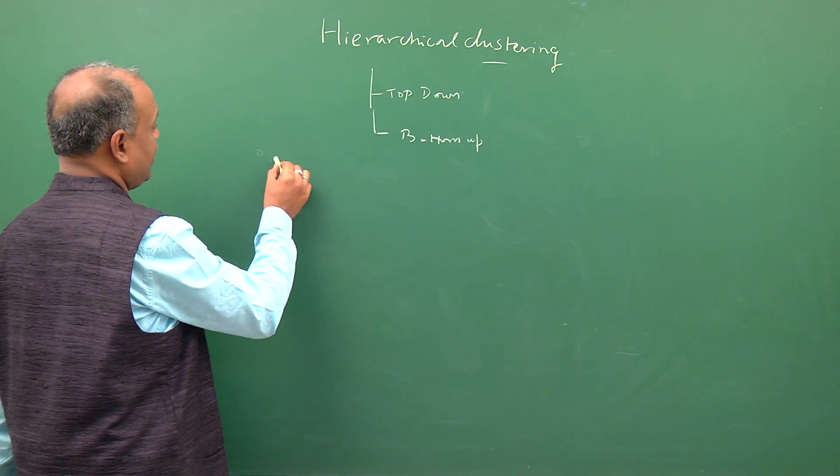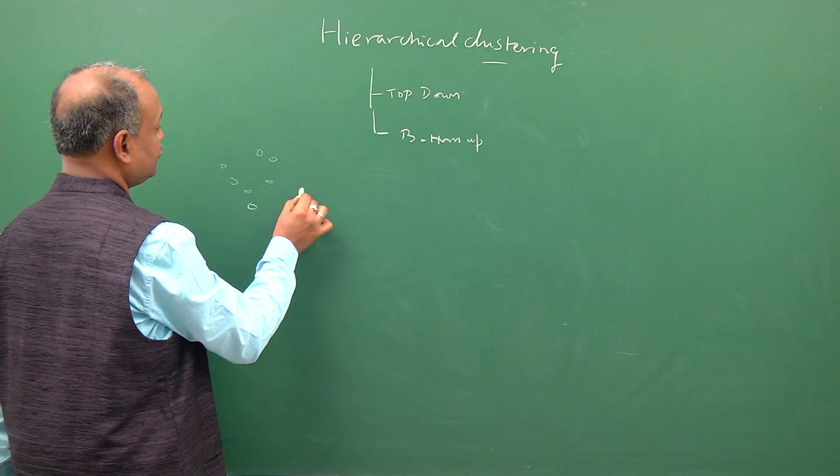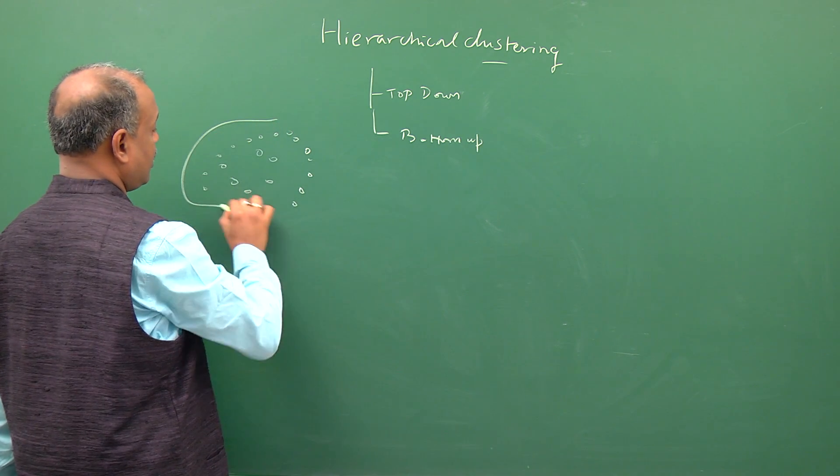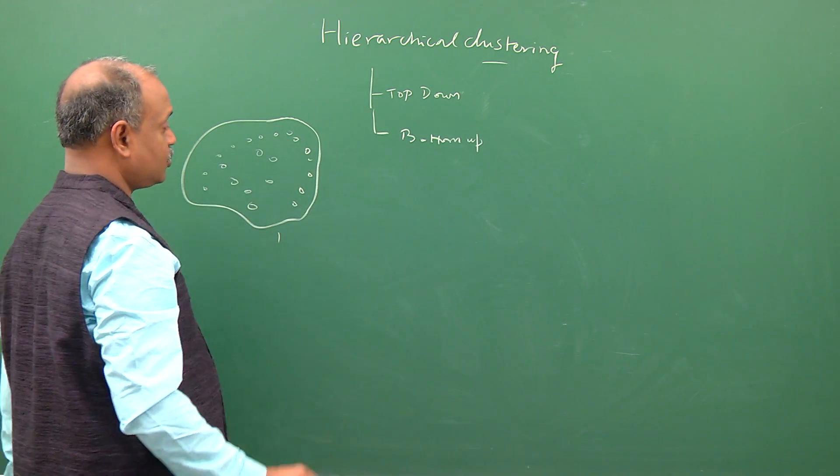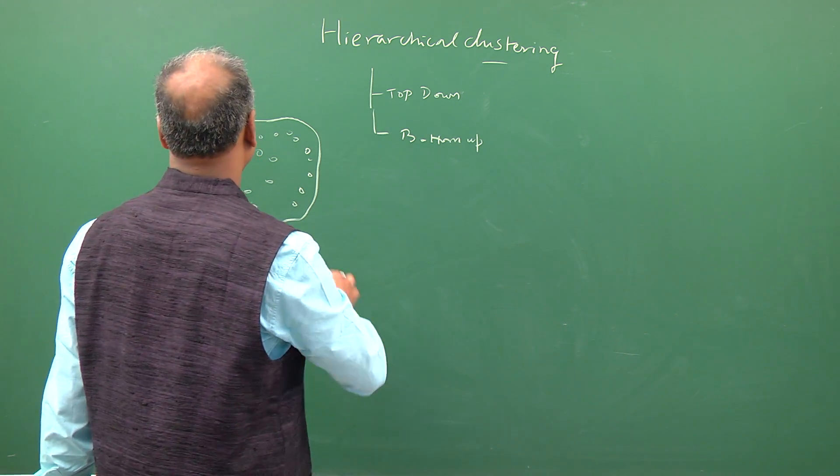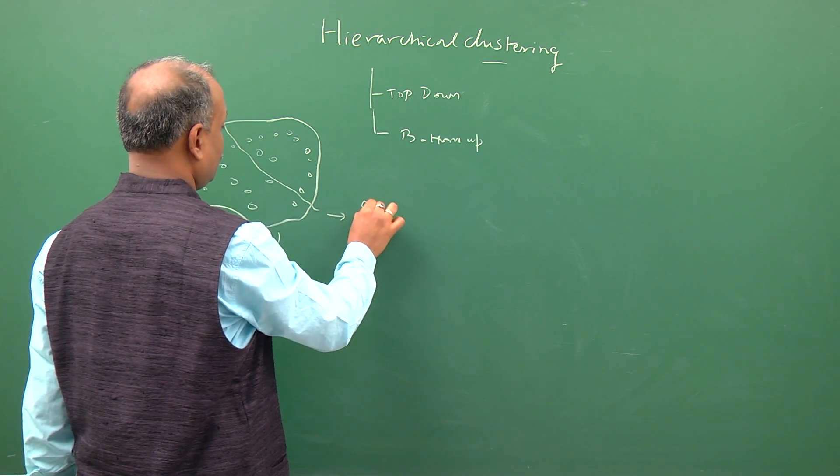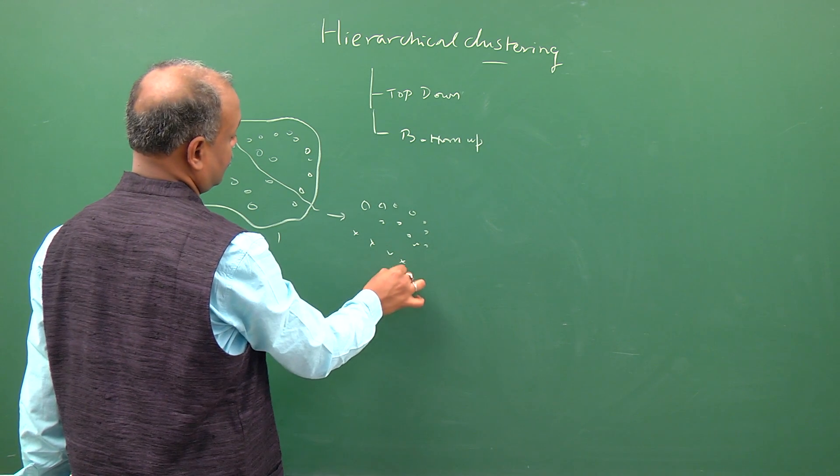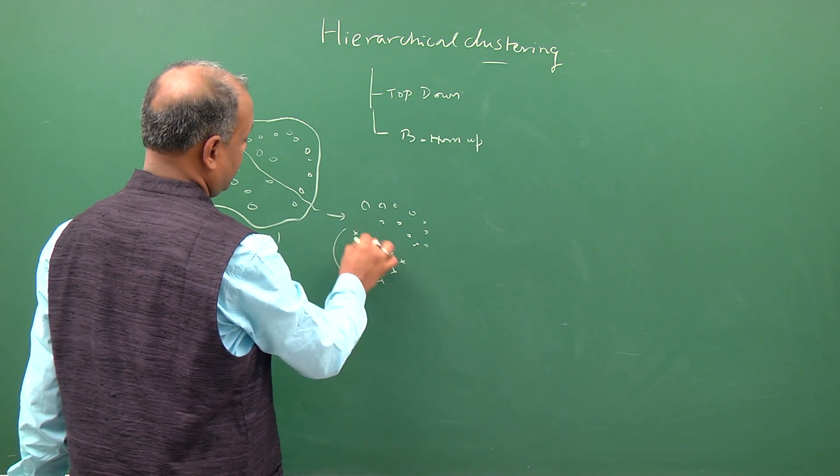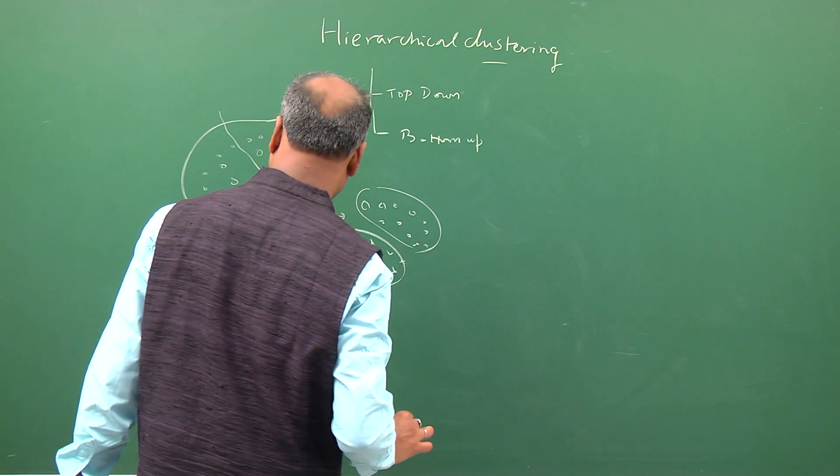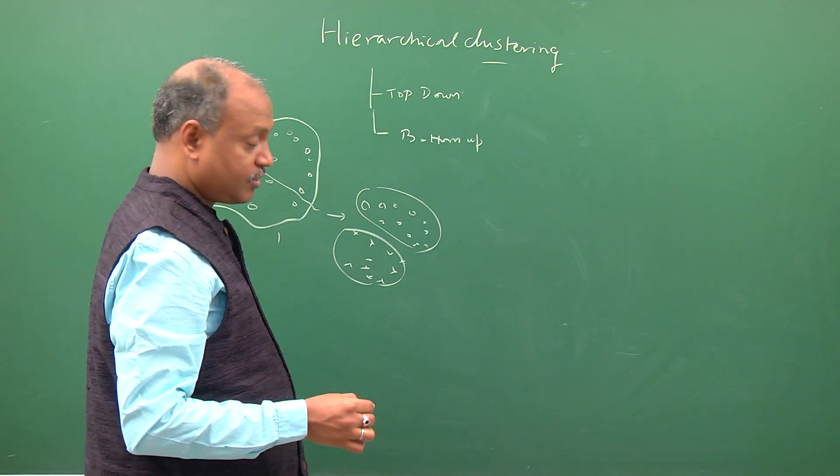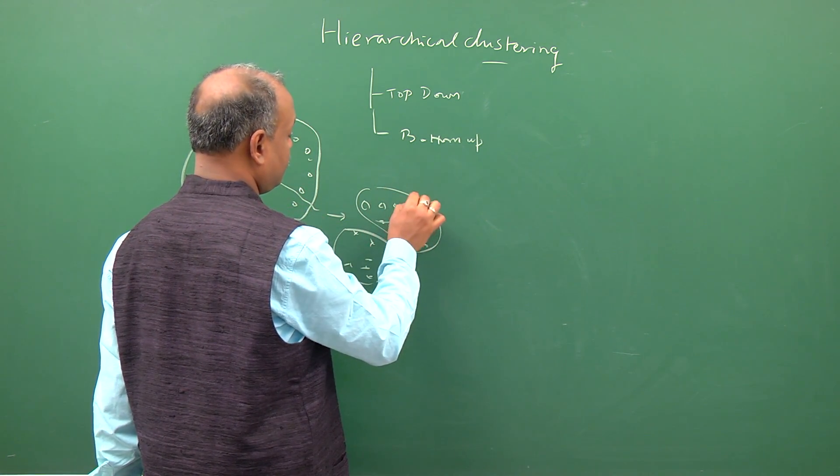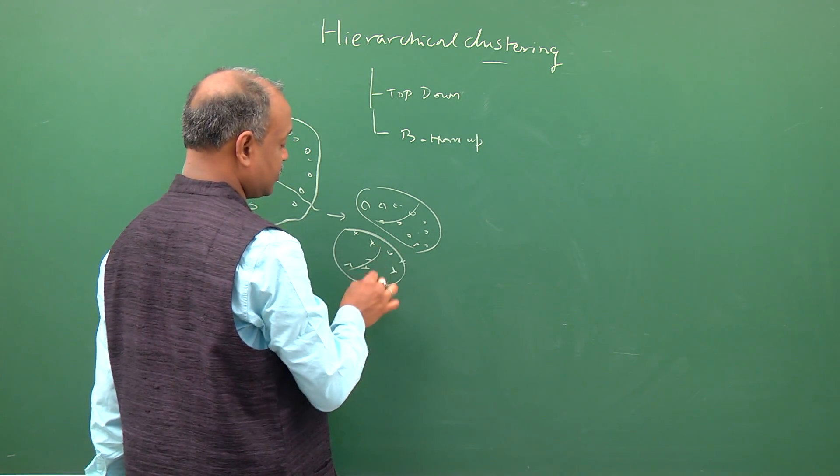In top-down approach what we usually do is we take all the data as one cluster to start with, then you start breaking it into two clusters. So you form next stage two clusters by means of say two-means clustering, then you run two-means clustering on the second one again, then you can form two clusters here and two clusters here, and again two clusters here and two clusters here.